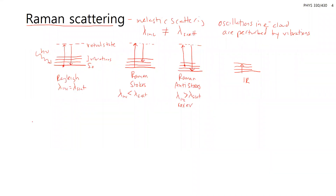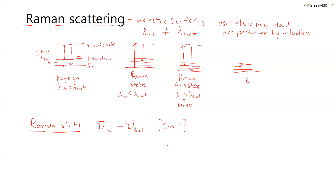Raman scattering can be characterized by the Raman shift, which is typically done in wave numbers — inverse centimeters. It's going to be the wave number of your incident light minus the wave number of your scattered light. You can see that commonality with IR spectroscopy. Because this involves vibrational levels, the convention is to use wave numbers.